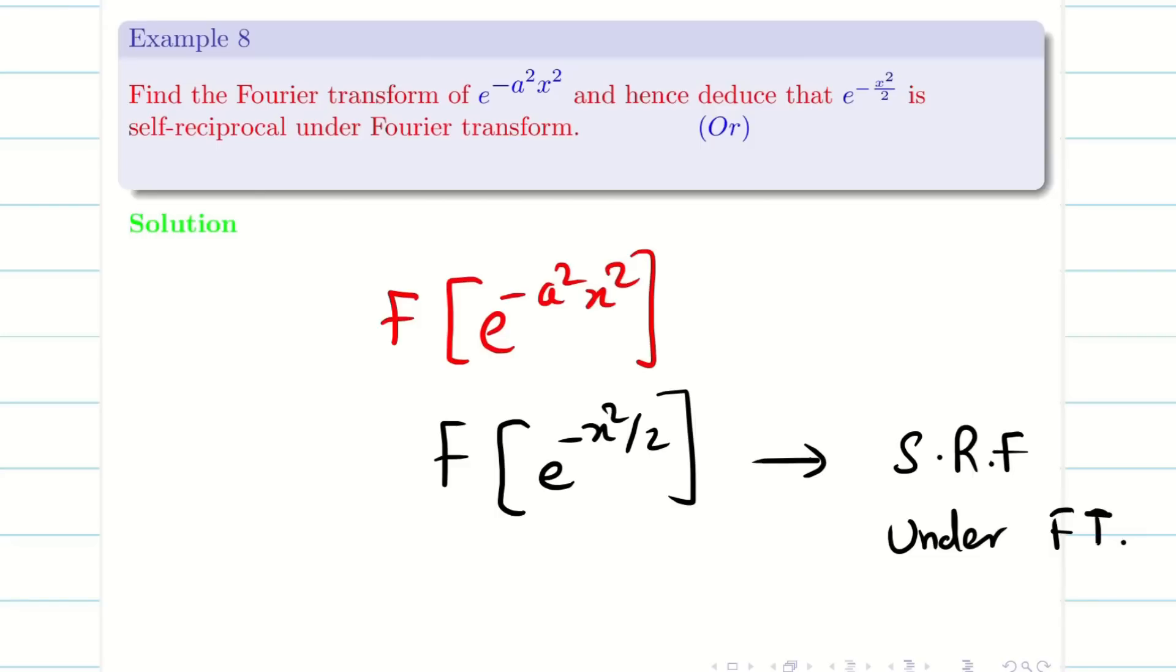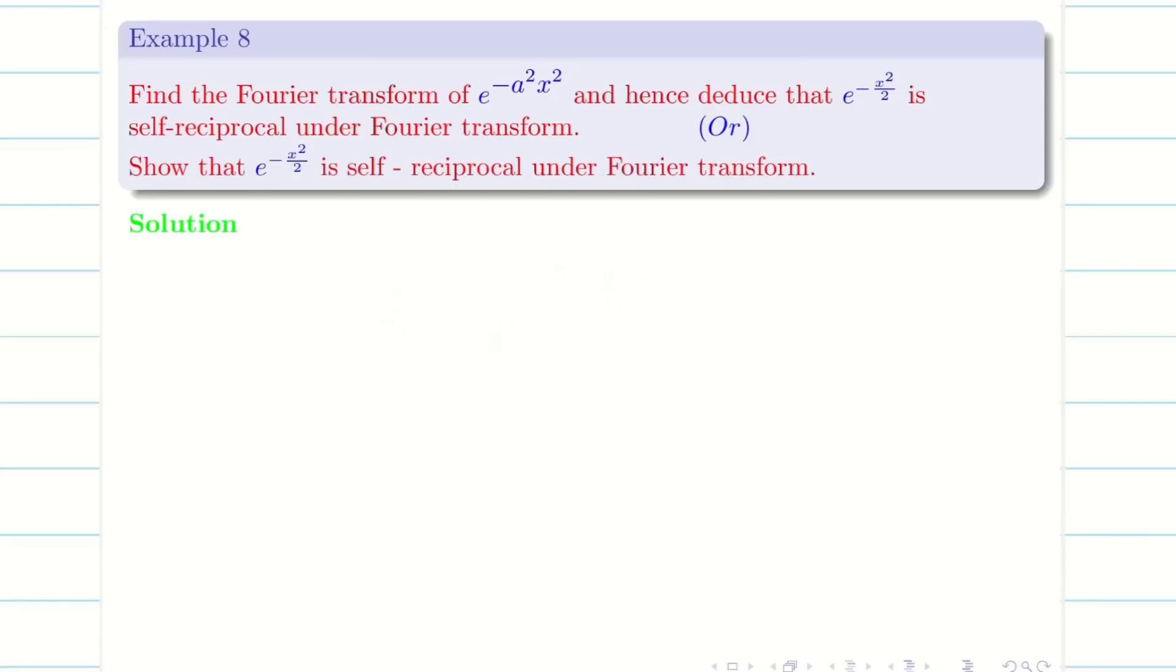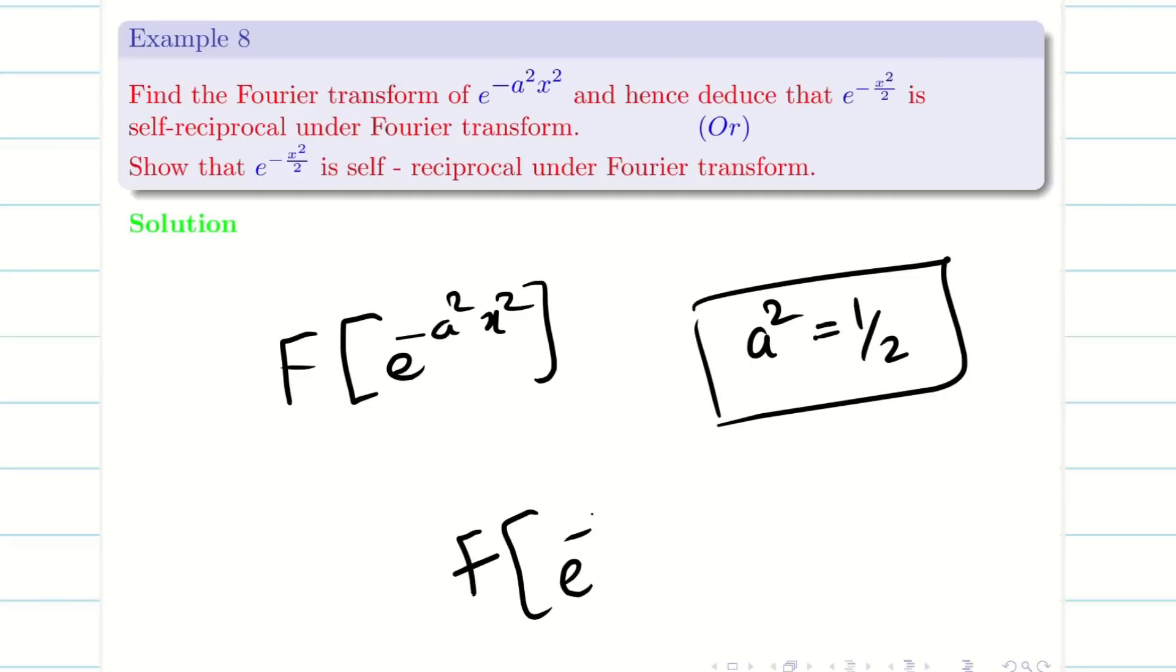In exams they will ask like this, or they will directly ask you to show that e to the minus x squared by 2 is an SRF under Fourier transform. Both questions are the same, but my choice is, whatever they give in the exam, it's better to find F of e to the minus a squared x squared, and then if you put a squared equal to 1/2, you'll get F of e to the minus x squared by 2. This is the easiest way because if you know the general formula you can easily solve the problem.